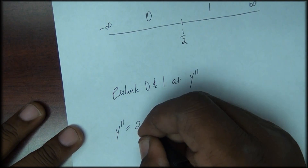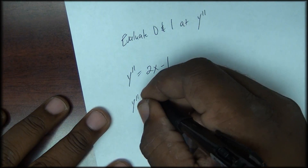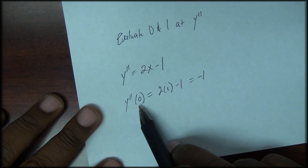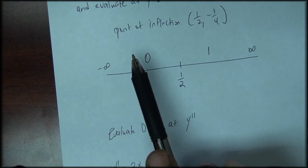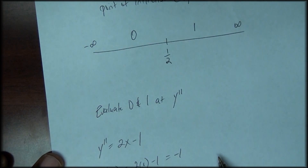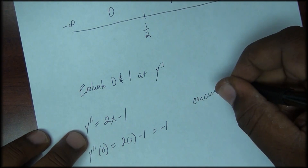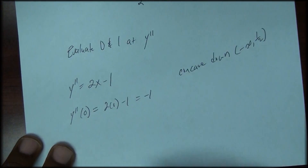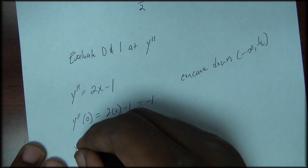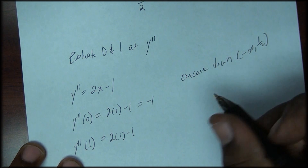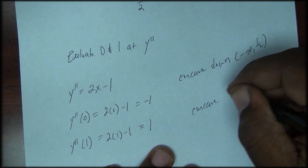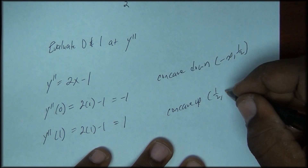Our second derivative is 2x minus 1. Evaluating y double prime at zero gives a negative value, so the graph is concave down on the interval from negative infinity to one-half. Evaluating y double prime at one gives positive one, so our graph is concave up on the interval from one-half to positive infinity.